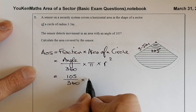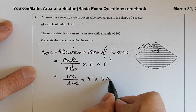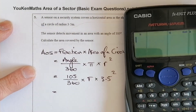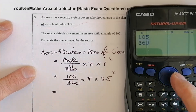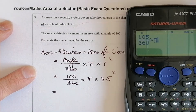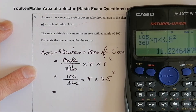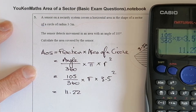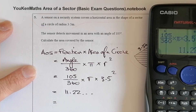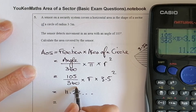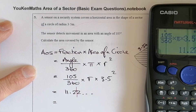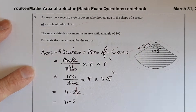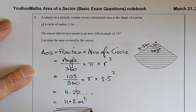So 105 over 360, times by pi, times by the radius which is 3.5, and we'll square that. Into the calculator: 105, go for 360, multiply by pi button, multiply by 3.5, and square it. That gives an answer of 11.22. Rounded to three significant figures: the 2 leaves the 2 as it is, so I've got 11.2. Working in metres on this question, so it's 11.2 metres squared.